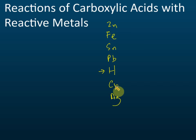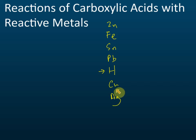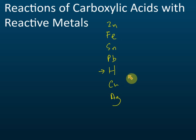Copper and silver cannot react with acid. There is one exceptional case — copper can react with nitric acid — but that's not in the scope of SPM. So just assume copper cannot react with acid. All other metals can react with acid to produce salt and hydrogen gas.